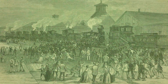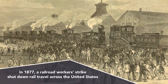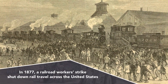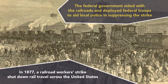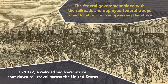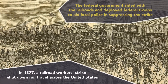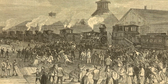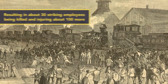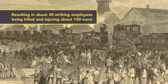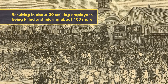Early attempts at organized labor strikes were met with opposition. In 1877, a railroad workers' strike shut down rail travel across the United States. The federal government sided with the railroads and deployed federal troops to aid local police in suppressing the strike. The strike ended in a bloody battle between workers and government forces sent to break the picket line, resulting in about 30 striking employees being killed and injuring about 100 more.